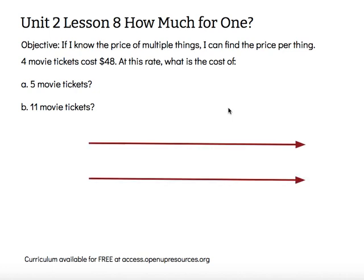To do that, I need two parallel number lines. It's really important that we label these number lines so that we can put the correct information in the correct spot and be able to grow or shrink our ratios as needed and maintain equivalency. I'm going to label the top 'number of tickets' and the bottom 'price.' So I've got zero — I bought zero movie tickets, it's cost $0. And if I buy four movie tickets, it's going to cost me $48.